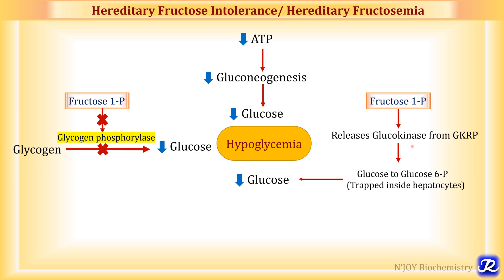The third important cause is that fructose 1-phosphate releases glucokinase from glucokinase regulatory protein. Glucokinase is the enzyme that phosphorylates glucose to glucose 6-phosphate in the liver. Normally, glucokinase regulatory protein keeps glucokinase bound in the nucleus; when glucose concentration increases, glucokinase is released to act on glucose. In fasting and starvation, glucokinase remains bound to the regulatory protein.